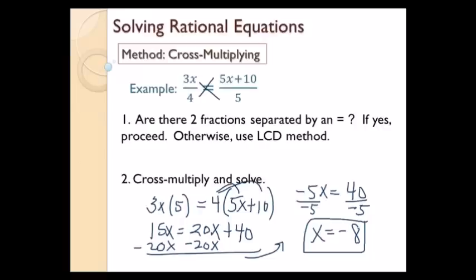So x equals negative 8. Now I can check it — I plug in negative 8 for x on both sides. Negative 8 times 3 is negative 24, divided by 4 is negative 6. And negative 8 times 5 is negative 40, plus 10 is negative 30, divided by 5 is negative 6. Same thing on both sides, so that's confirmed. I also need to check that plugging in doesn't make any denominator equal to 0. There are no x values in the denominators here, so that's fine. My answer is negative 8.